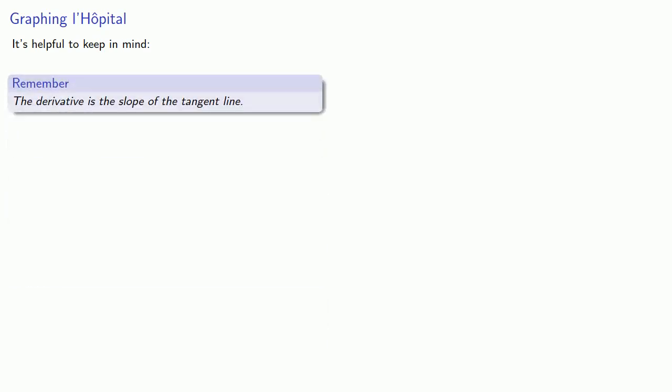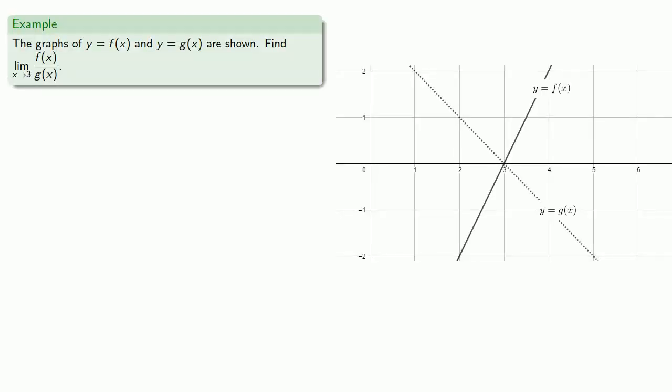It's helpful to keep in mind that the derivative is the slope of the tangent line. For example, we might have the graphs of y equals f of x and y equals g of x, and attempt to find the limit as x approaches 3 of the quotient.